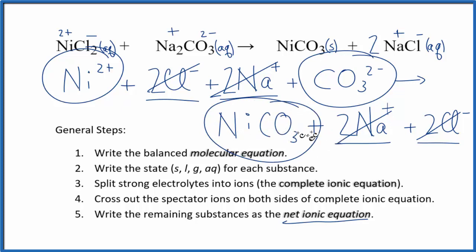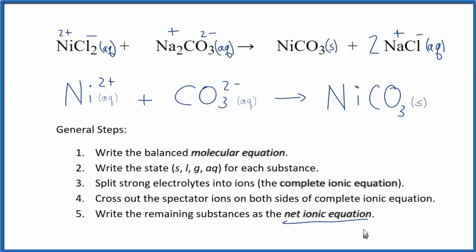I'll clean this up and add in the states for each substance. We'll have a very tidy net ionic equation for NiCl₂ plus Na₂CO₃. So this is our net ionic equation for NiCl₂ plus sodium carbonate. This is Dr. B, and thanks for watching.